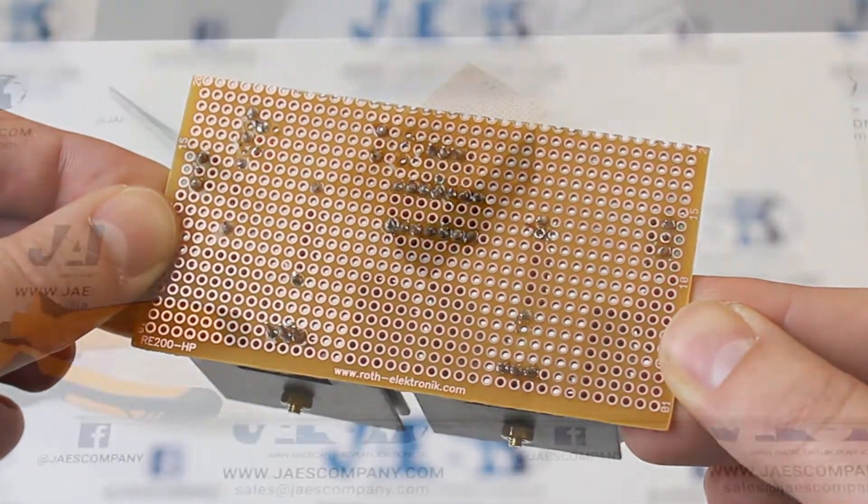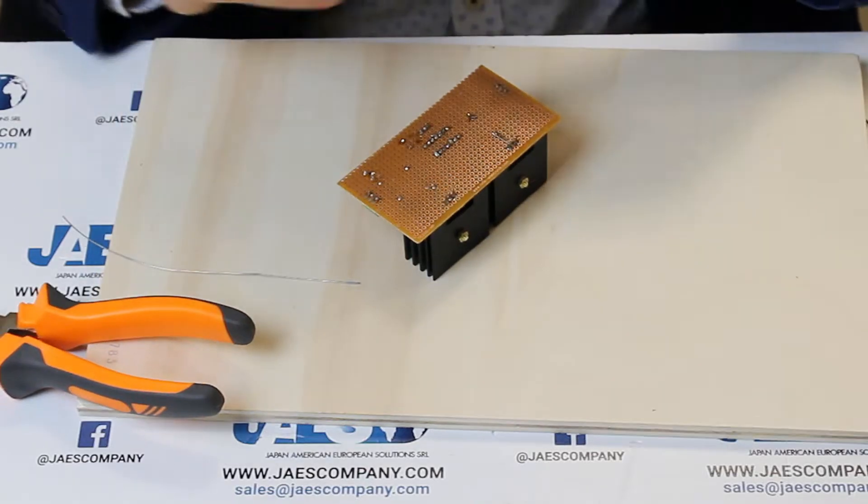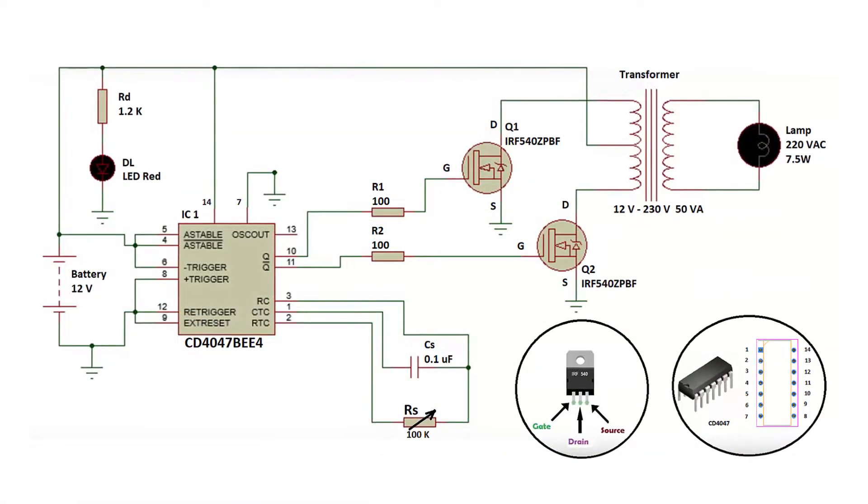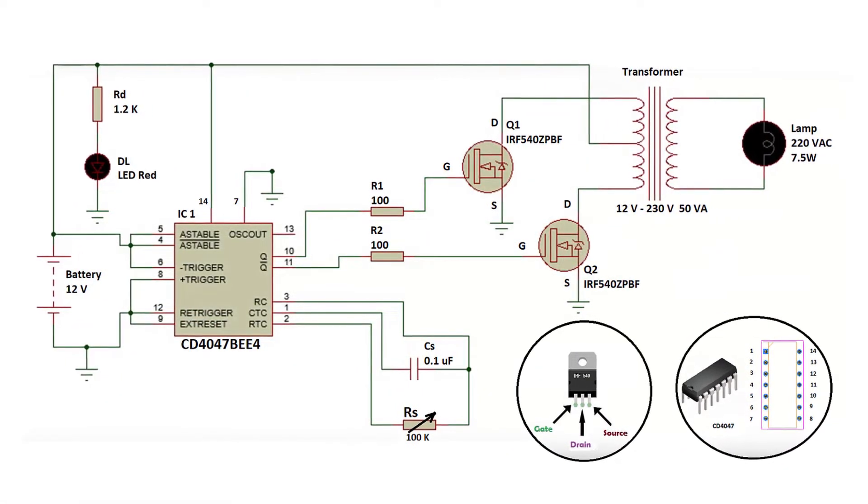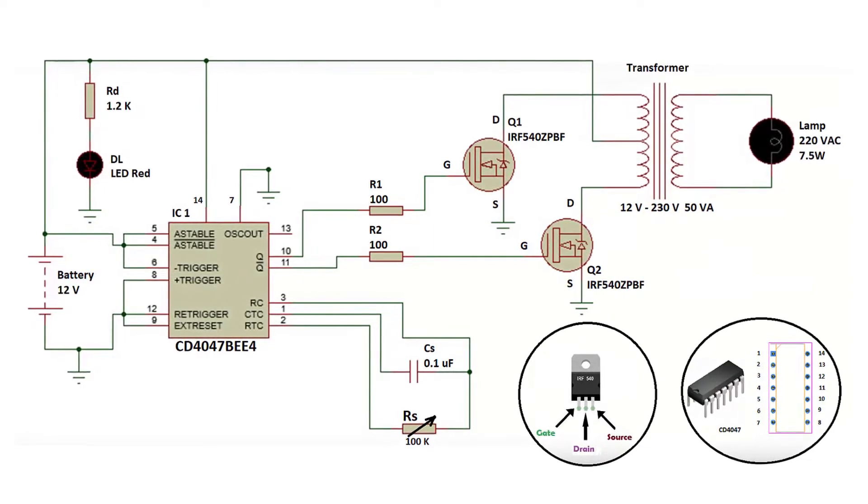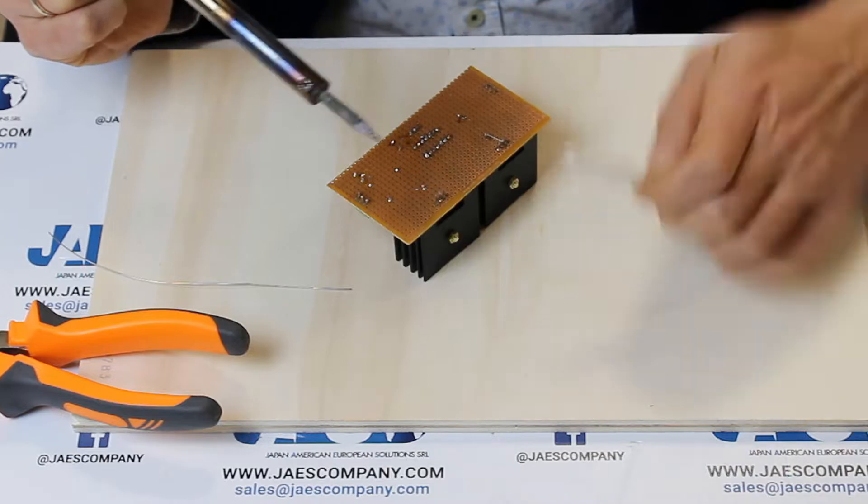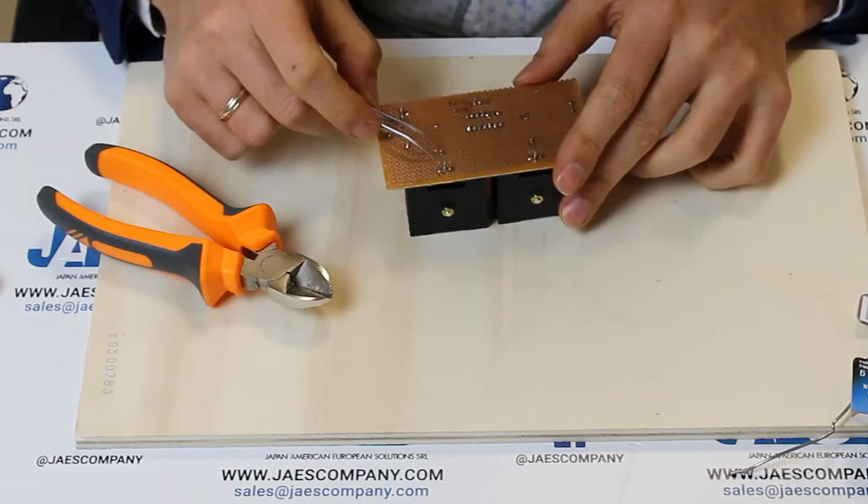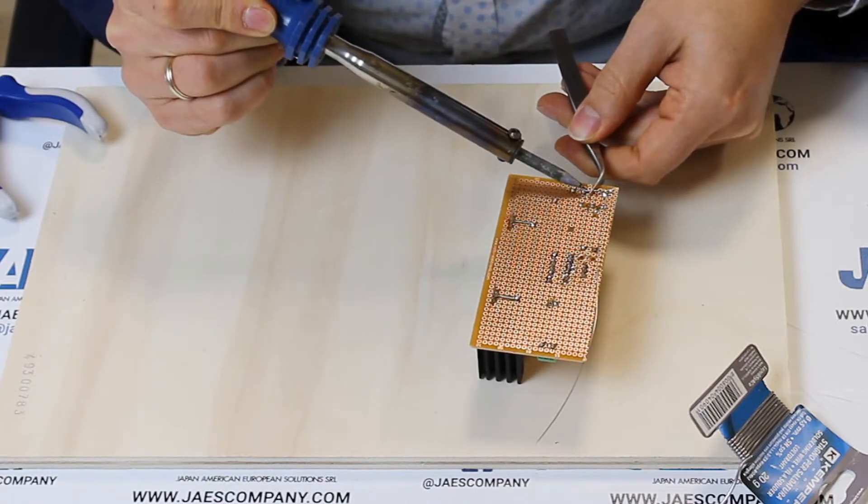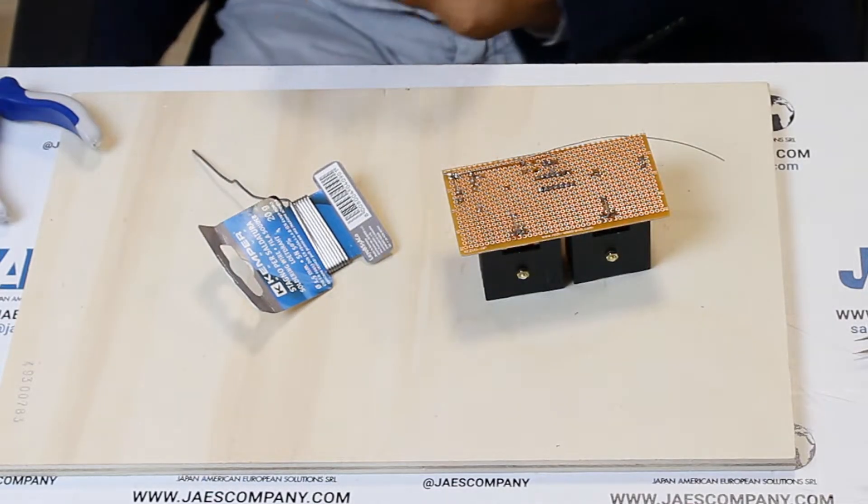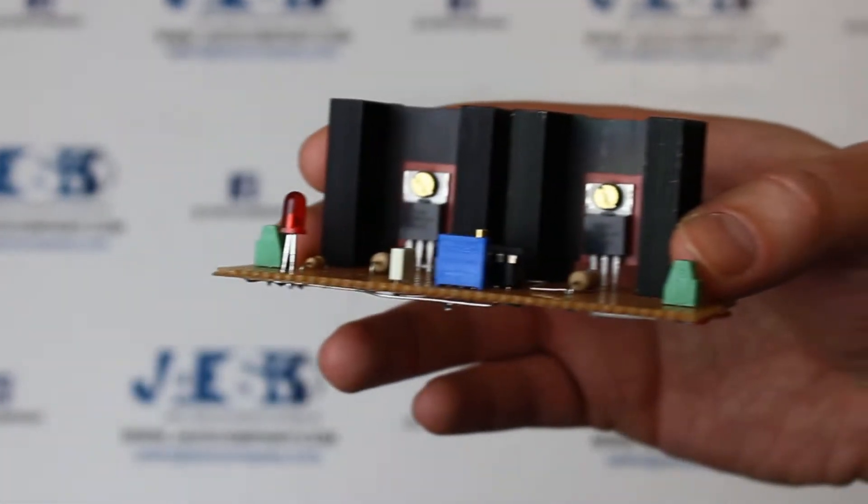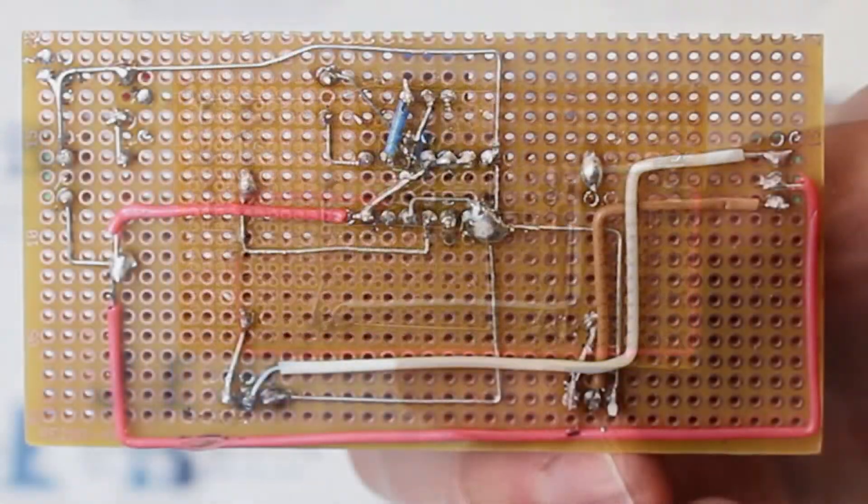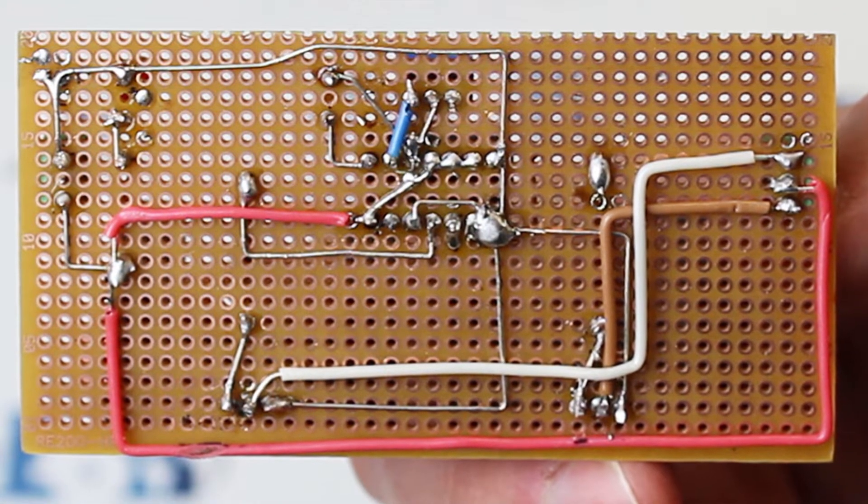Now that all the components are welded on the board, let's create the circuit connections following this scheme. These welds are useful to give electrical continuity to the circuit, connecting components and electrical conductors one to each other.